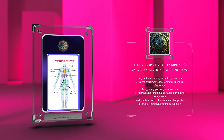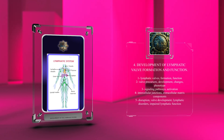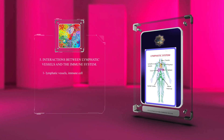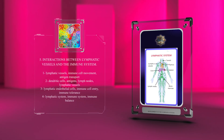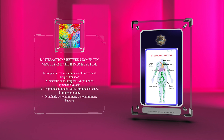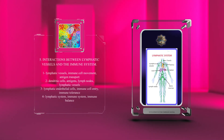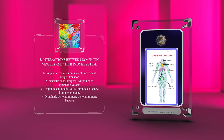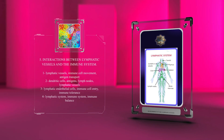Any disruption in valve development can lead to lymphatic disorders and impaired lymphatic function. Lymphatic vessels are important for immune cell movement and antigen transport. Dendritic cells capture antigens and migrate to lymph nodes through lymphatic vessels. Lymphatic endothelial cells help immune cell entry and also contribute to immune tolerance. Overall, the lymphatic system and immune system work together to maintain immune balance.